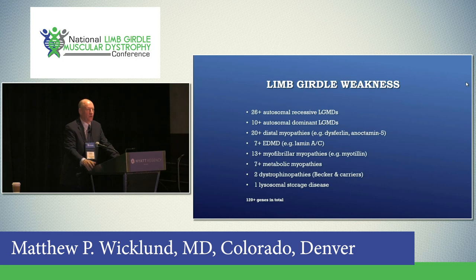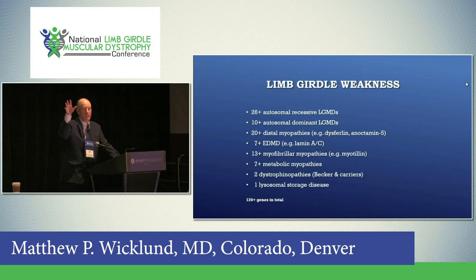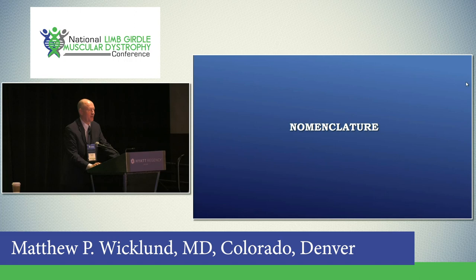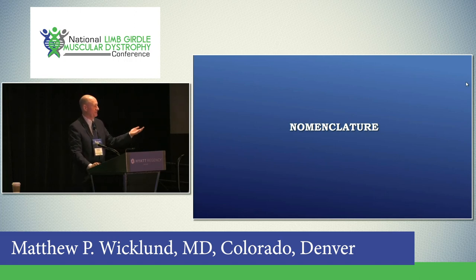There are limb girdle muscular dystrophies with names, numbers, and letters associated with them. But in actuality, when you present to a clinician, all you know is that you're weak proximally — and so you may have any of these hundred-plus genes. Let's get to the nomenclature. What do we call these? It really doesn't matter — you have what you have. Our job is to figure out how to make that better.